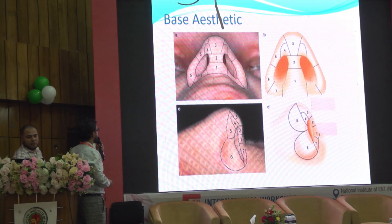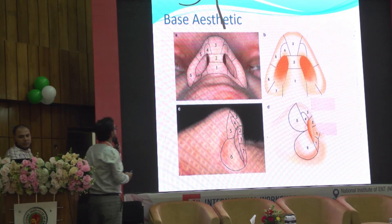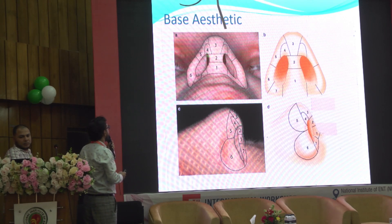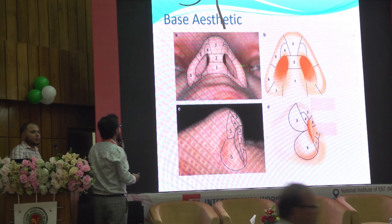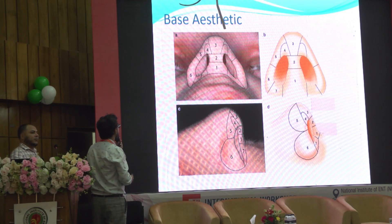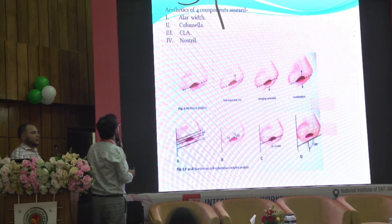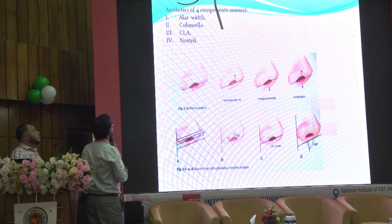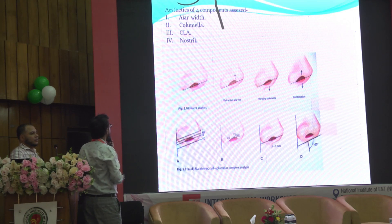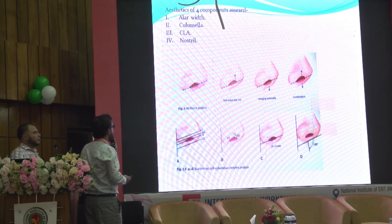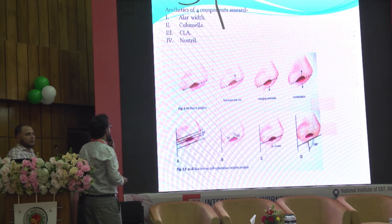Regarding base aesthetics, the columellar part should be two-thirds and the lobular part one-third. The basal width should equal the intercanthal distance. Four components are assessed in base aesthetics: alar width, columellar-lobular angle, and nostril shape. There may be alar rim retraction, overhanging columella, or a combination. The columellar-lobular angle should be 45 degrees for aesthetic purposes.